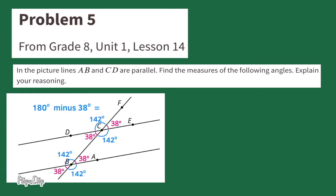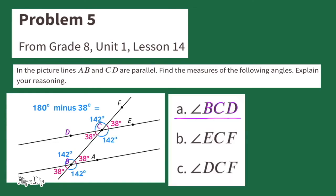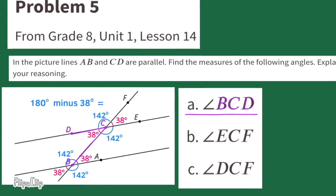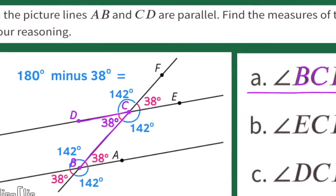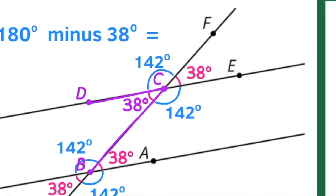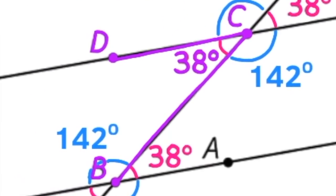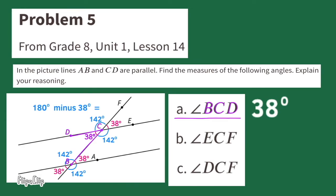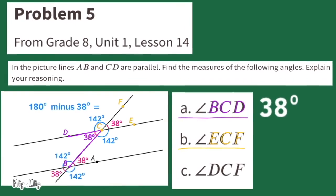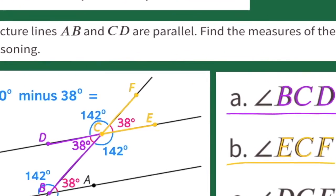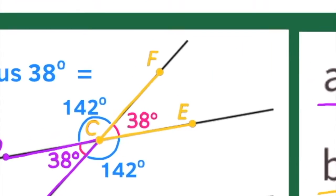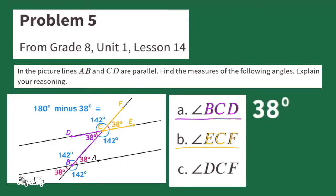Now we're all set to answer the questions. Part A: What's the measure of angle BCD? Locate those three points B, C, and D. The measure is 38 degrees. Part B: What is the measure of angle ECF? Locate angle ECF and you'll find the answer. This angle's measure is also 38 degrees.